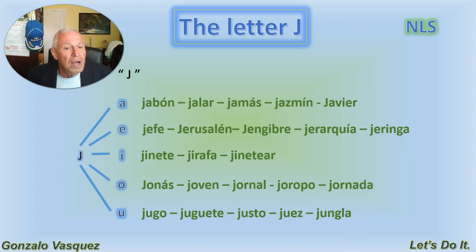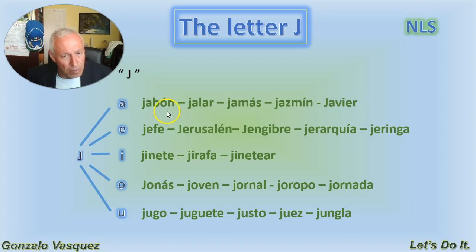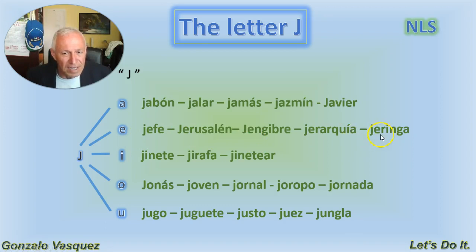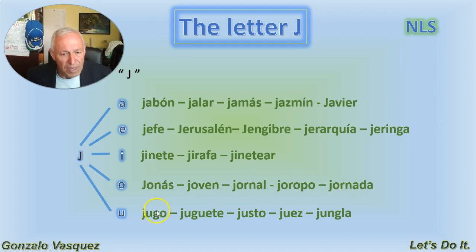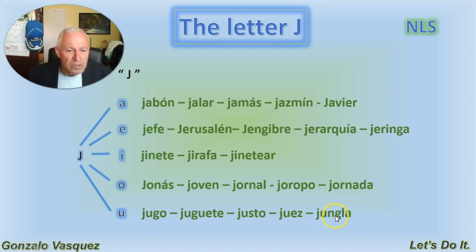Let's review again: la J con la A — jabón, jalar, jamás, jazmín, Javier. Con la E — jefe, Jerusalén, jengibre, jerarquía, jeringa. Con la I — jinete, jirafa, jinetear. Con la O — Jonas, joven, jornal, joropo, jornada. Con la U — jugo, juguete, justo, juez, jungla. That is la letra J.